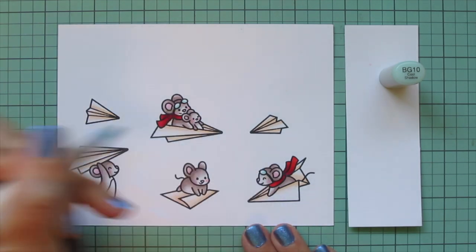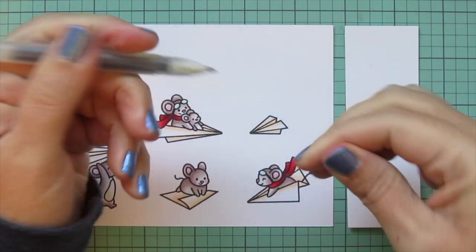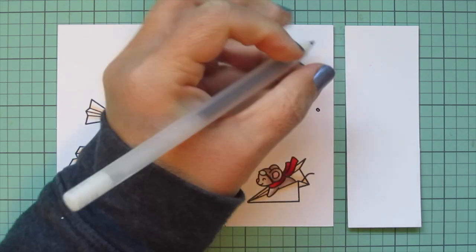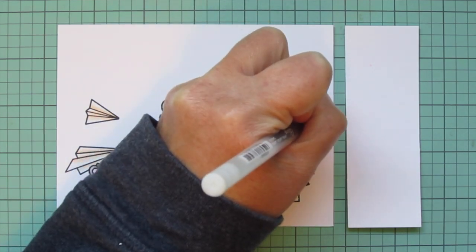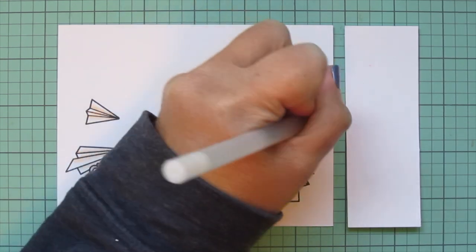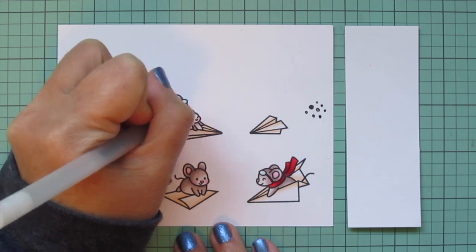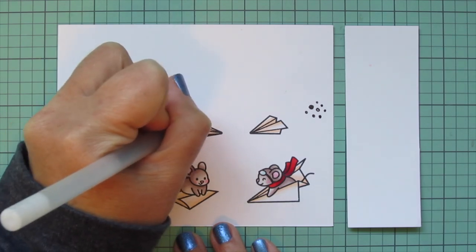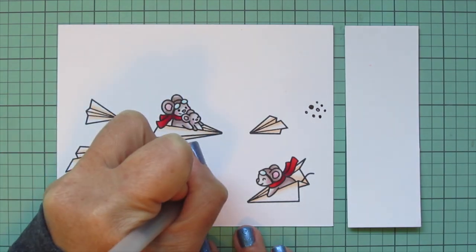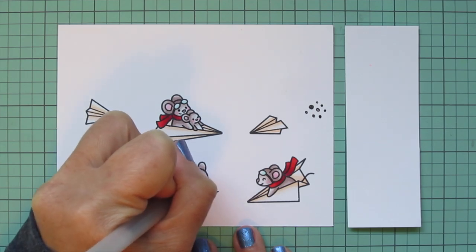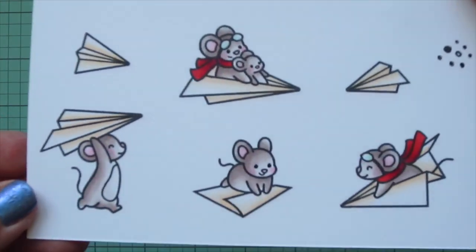Once I am done with that, I'm just going to color in the little flight goggles using BG10 to make them look like glass. Then I'll grab a black Sakura Jelly Roll pen and I'm going to go over the eyes of the mice that have their eyes open. I think that's a nice little touch. It makes them nice and bright, gives it a little bit of a raised texture. Once I'm done with that, I'm going to trim these images out with their matching dies.